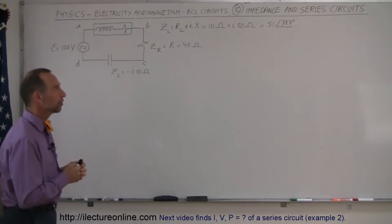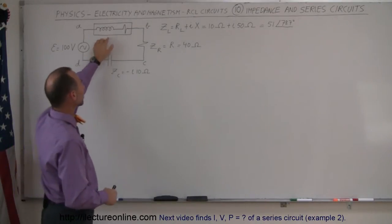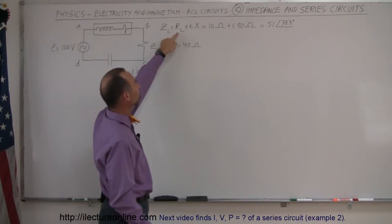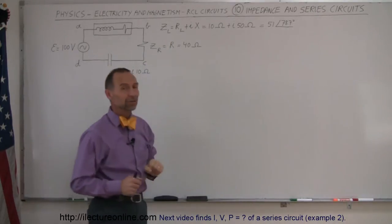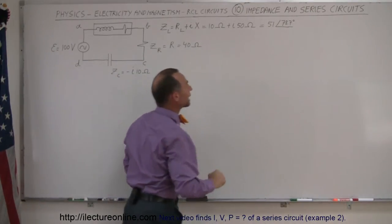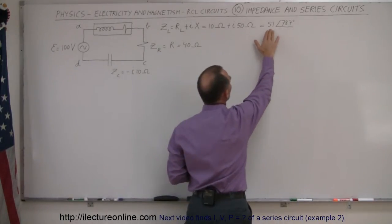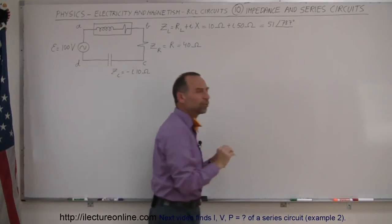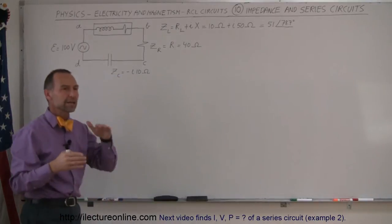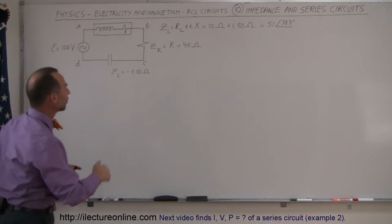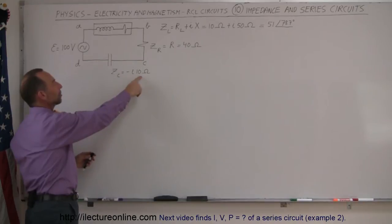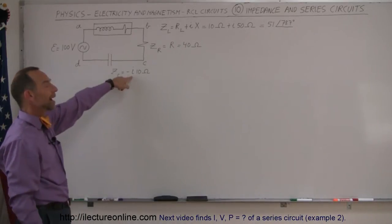We have an inductor, and of course the inductor has some internal resistance, so we have to account for that. The impedance of the inductor will be the internal resistance plus the reactance of the inductor. In this case we have 10 ohms of resistance and 50 ohms of reactance, giving a magnitude of 51 ohms at an angle of 78.7 degrees. The resistor has an impedance of just 40 ohms, and the capacitor has a reactance of negative 10 ohms — 90 degrees behind the resistance.